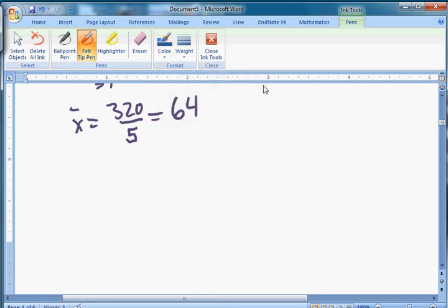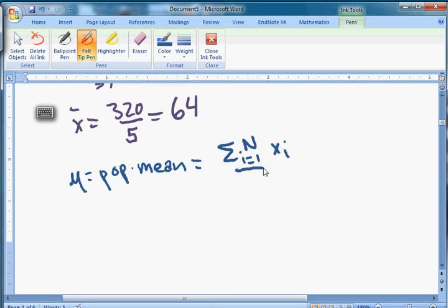Because you have to count everybody. But we do have a symbol for population mean, mu, is the population mean. And it's pretty similar. The formula looks like this: it's the sum from i equals 1 to big N of X sub i, all divided by big N. You have to count, you have to measure everybody's height to do that, but that's fine.